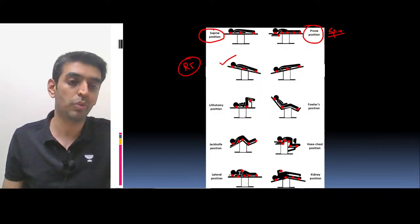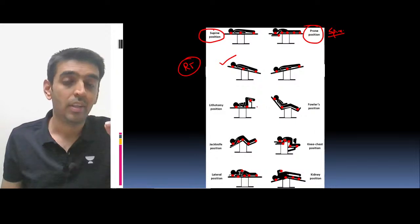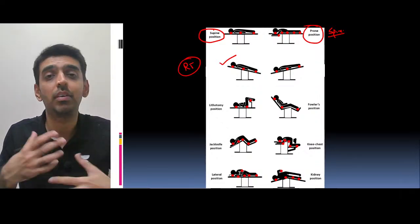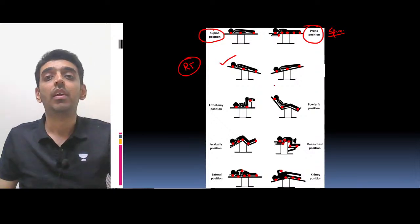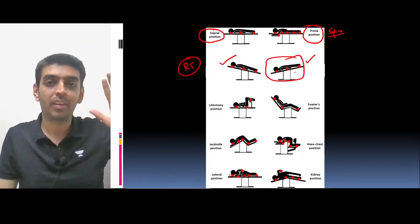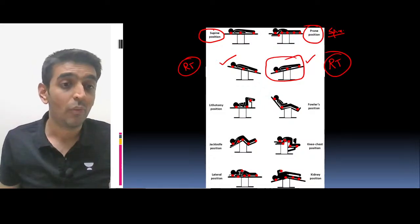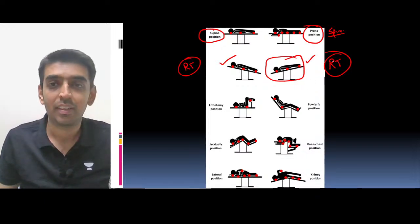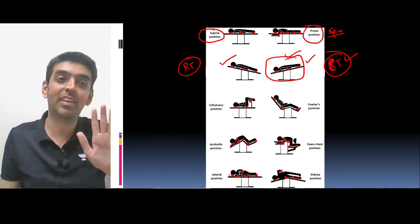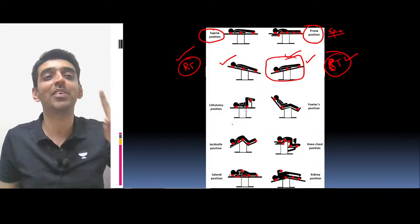For pylon needle procedures we most often give a lithotomy position. It depends upon the position of the sinus as well. If a Z-plasty or V-Y plasty is to be done, they may make the patient prone as well. Now, where the head is low — that is Trendelenburg position. Reverse Trendelenburg is where the head is high. For lap chole, we will do Reverse Trendelenburg.